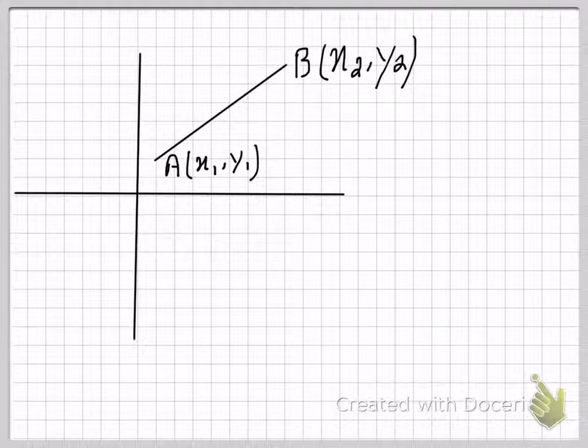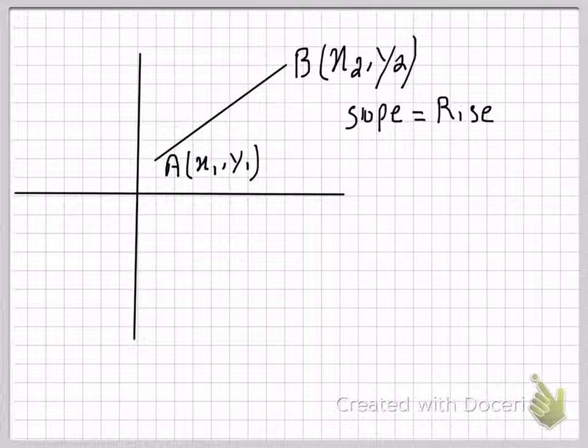In this video I will teach you how to calculate the slope of any straight line. Now remember, slope is also called the gradient and that is basically equal to your ratio of the line's rise over its run.